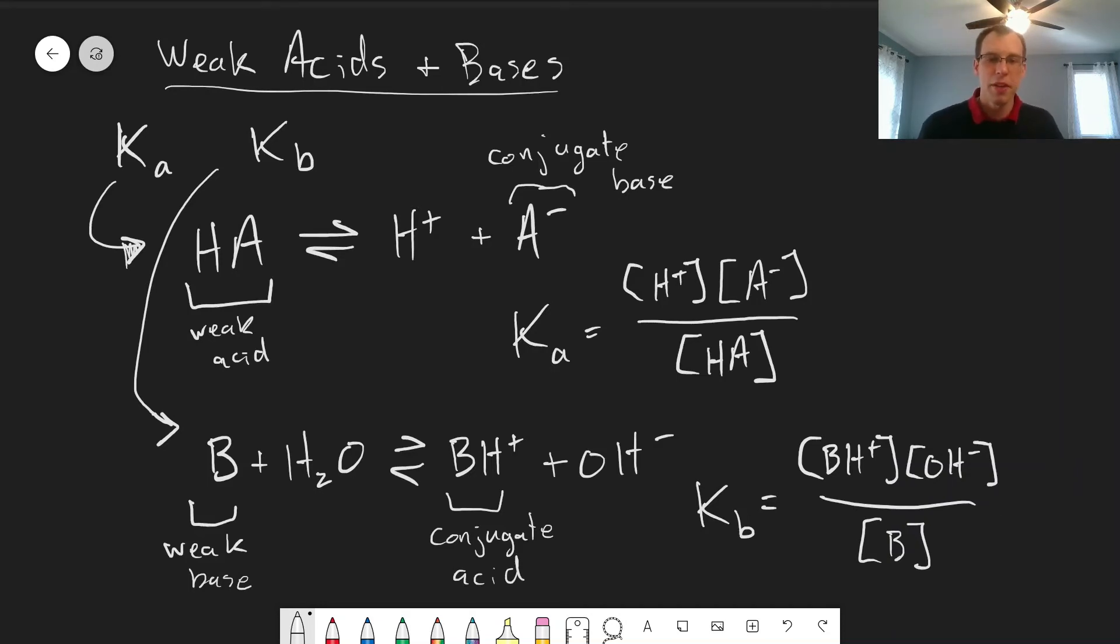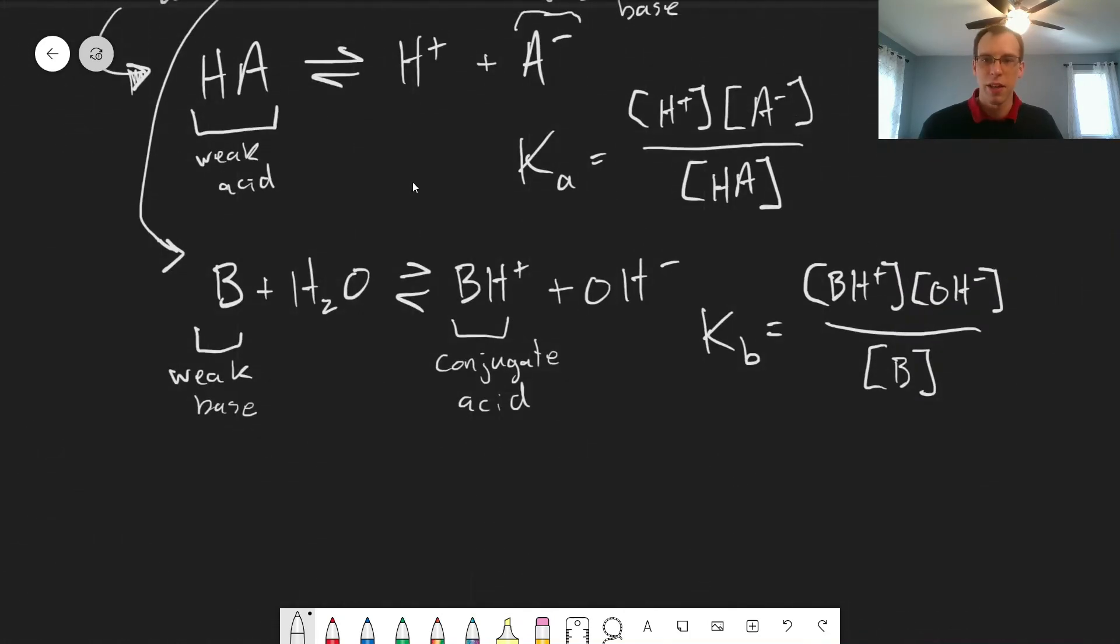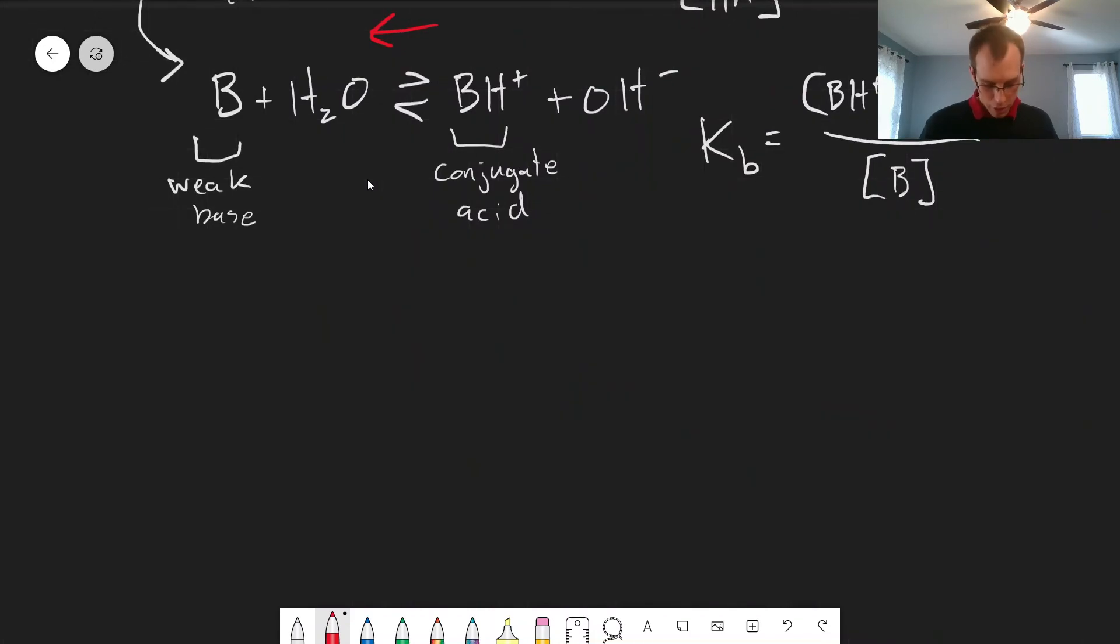Okay, so these Ka and Kb values, for weak acids and bases, these tend to be small, because by definition of it being a weak acid or weak base, the equilibrium favors the left-hand side for both of these. So these are all going to be values much less than 1 for our weak acid and weak base. Now, of course, how much less they are than 1 tells us how weak the acid or base is.